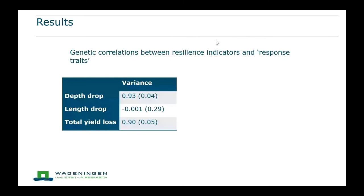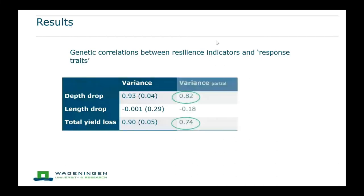Variance was very strongly genetically correlated with depth of drop and total yield loss — a really nice result. However, variance, drop depth, and total yield loss were all also strongly correlated with milk yield level, so we had to adjust for milk yield level as well. The partial correlations are a bit lower but still strong. This means that among cows with the same milk yield level, the ones that produce milk more stably are also less affected by herd disturbances — a nice confirmation that variance tells you something about how much a cow is affected by disturbances.